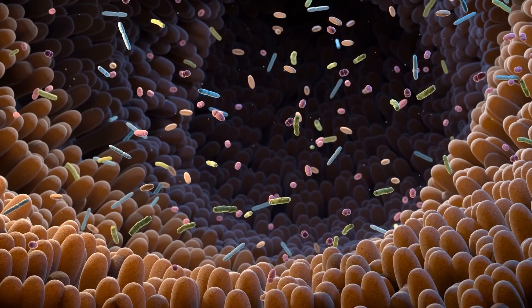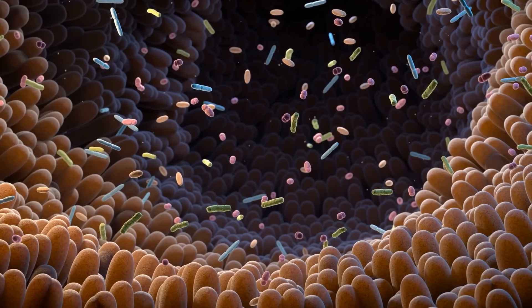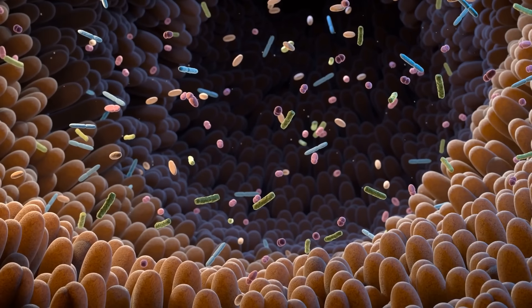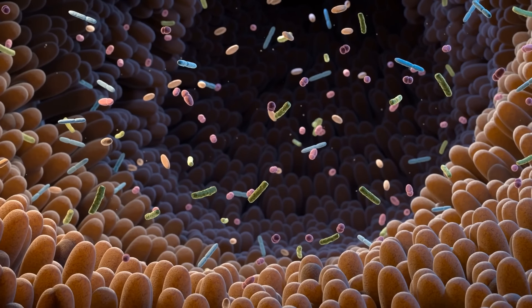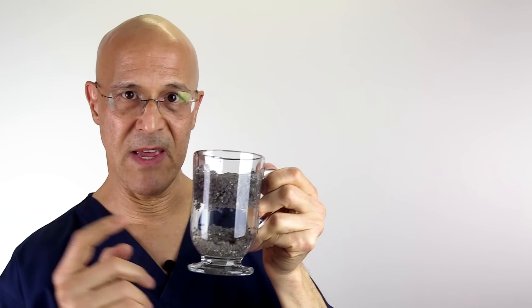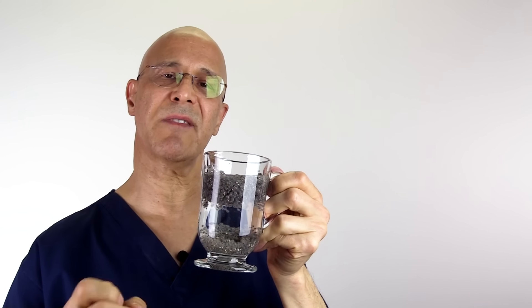And when that soluble fiber meets with those probiotics, that's breakfast for them, that's lunch for them, that's dinner for them, and they get really excited. Why? Because this is how your microbiome grows, by feeding on the soluble fiber. And the end result of those probiotics feeding on those prebiotics is it secretes short-chain fatty acids.